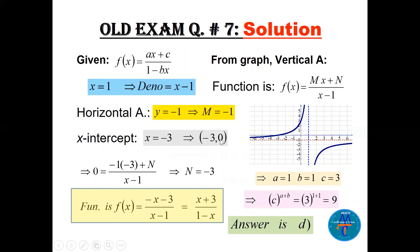The x-intercept is at x = -3, so substituting (-3, 0) into the function gives n = -3. The function is (-x - 3) / (x - 1). Multiplying numerator and denominator by -1 gives (x + 3) / (1 - x). Comparing with the given form (ax + c) / (1 - bx): a = 1, b = 1, and c = 3.